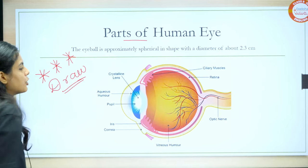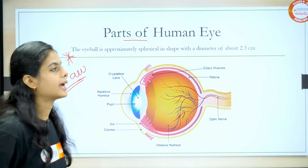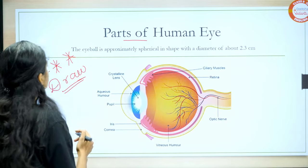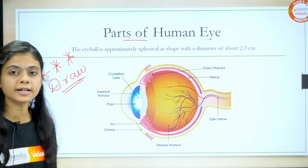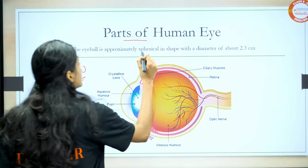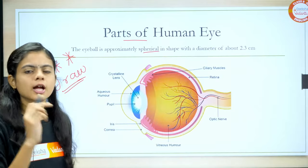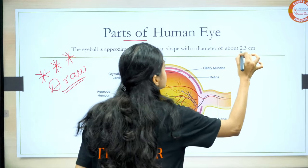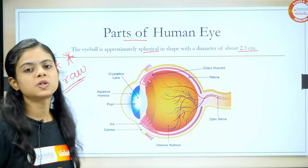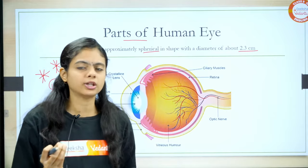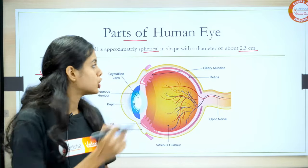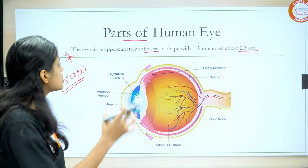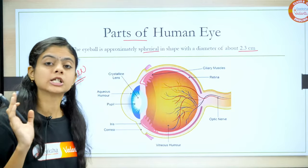So learn the drawing of the human eye and labeling the parts. Before explaining the parts, let's read what is given. The eyeball is approximately spherical in shape — not a complete sphere, but approximately a sphere kind of structure — with a diameter of 2.3 centimeters. In an MCQ or one-mark question, they may ask what is the diameter of the human eye? You have to remember that it is 2.3 centimeters.